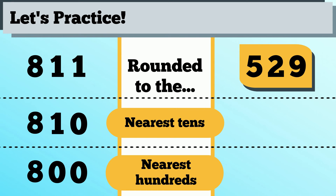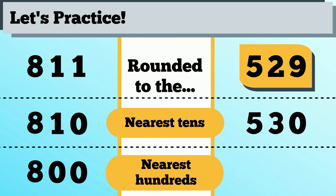What about 529? Try rounding this to the nearest tens. Since the ones digit is 9, we round the number up to 530. How about rounding it to the nearest hundreds? Because the tens digit is 2, we round the number down to 500.